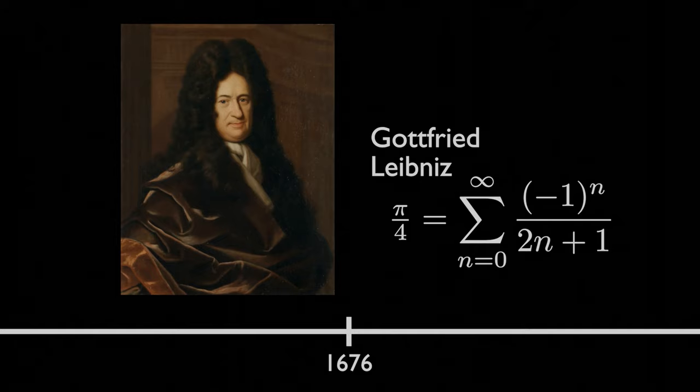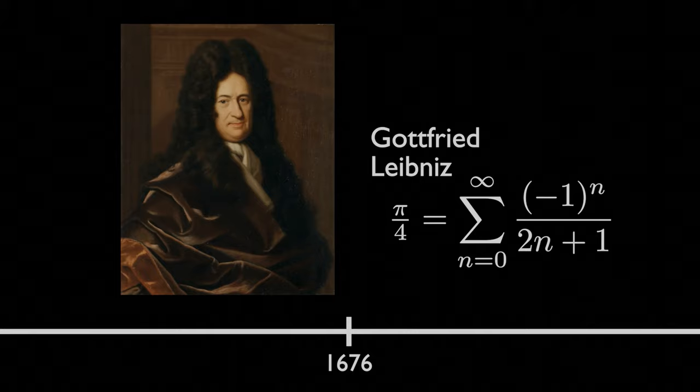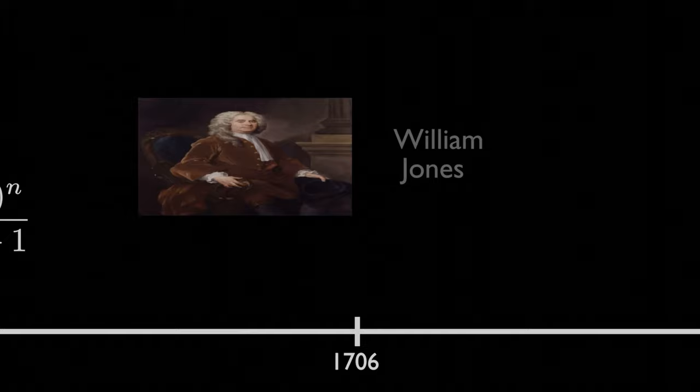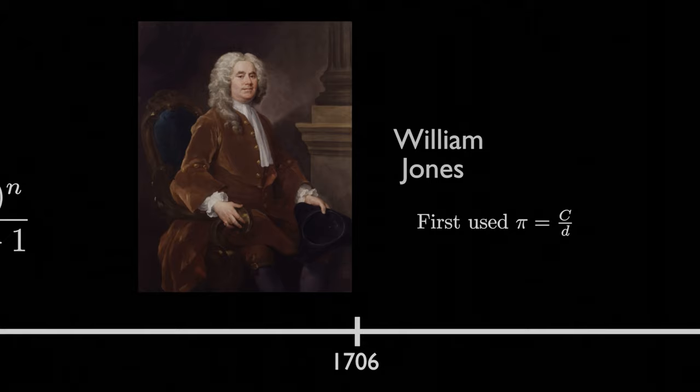For centuries, many individuals would improve the precision of the calculation of Pi, however, they would make small mathematical errors leading to a few digits being incorrect. In 1706, the Greek letter Pi was first used as a variable representation of the ratio between circumference and diameter. It was introduced by the Welsh mathematician and close friend of Isaac Newton, William Jones.